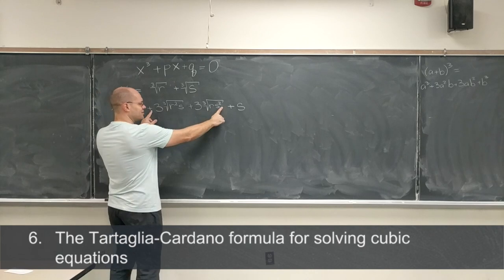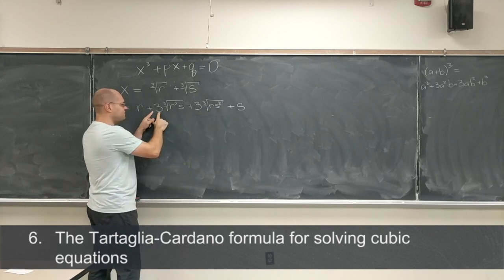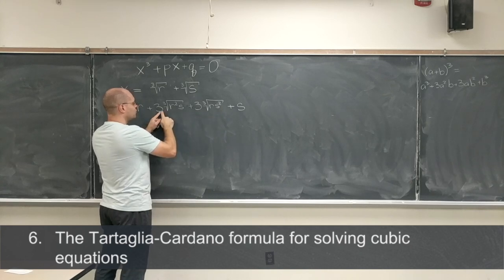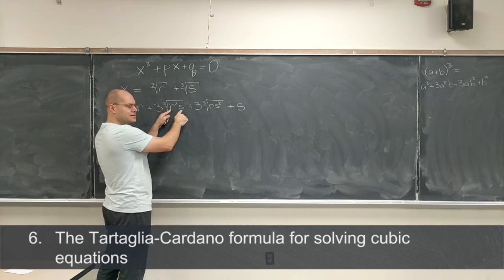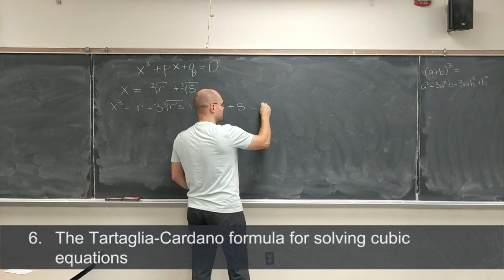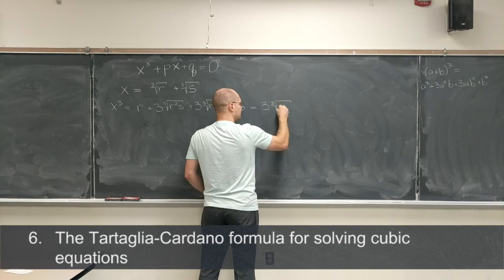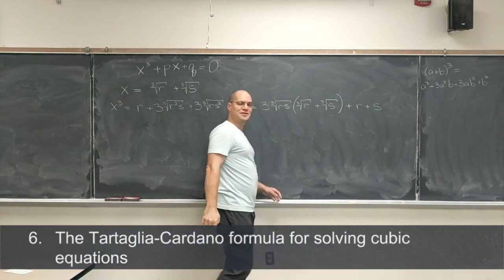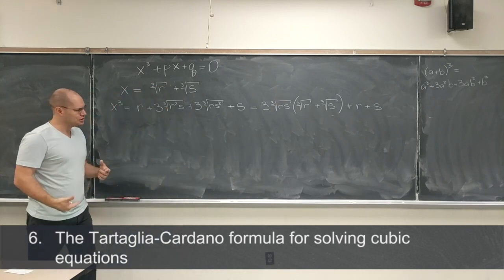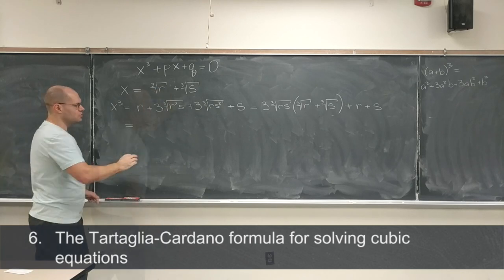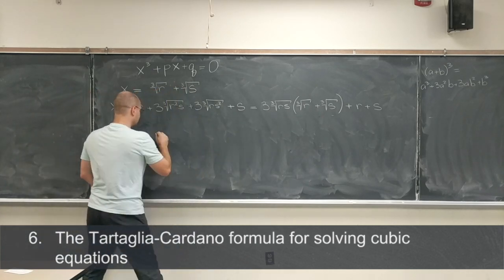Now let's group them together, this and this. Let's factor out from this, let's factor out 3 times the cubic root of r s, leaving one r in the first term and one s in the second term. Okay, so far so good. And then, notice, this is kind of the breakthrough, that this is x again, that's what x is. So I'm just going to put x for that.